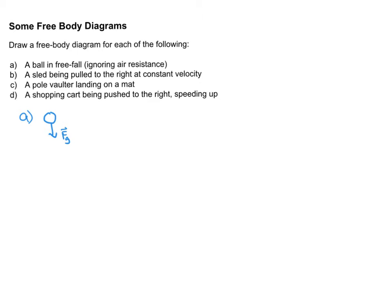B, a sled being pulled to the right at constant velocity. So I'll use a rectangle for the sled. The key word is constant velocity. If you think of Newton's first law, constant velocity means the forces have to be balanced. So there's going to be a pull to the right. A pull is usually a rope or something, so I'm going to label this as tension.